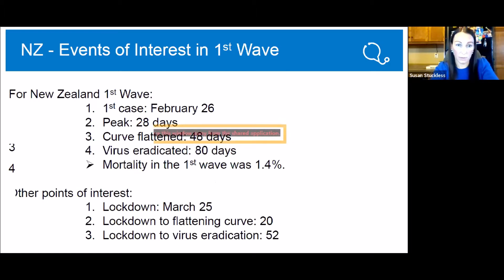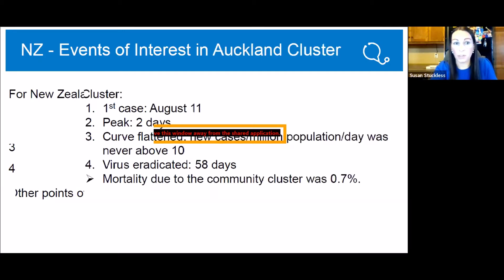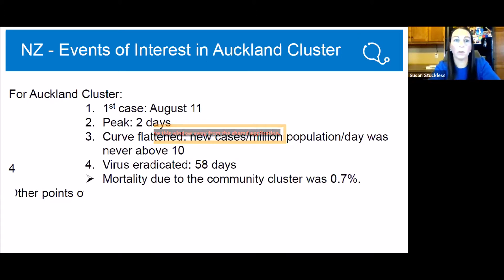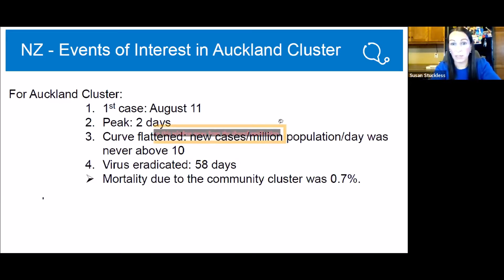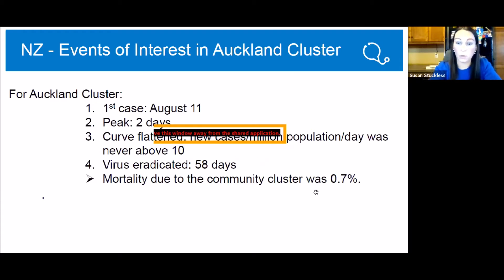For New Zealand's first wave, the first case was February 26th, the peak was 28 days, the curve was flattened within 48 days, and the virus was eradicated within 80 days. In their second wave, the first case was identified on August 11th, the peak was two days, and the curve actually never went above 10 cases per million — it stayed flattened — and they eradicated within 58 days as opposed to 80 in the first wave. So they went hard and quick and were able to eradicate the virus faster than in their first wave.